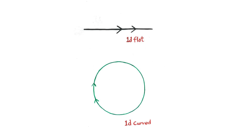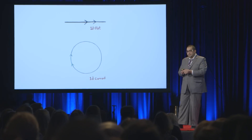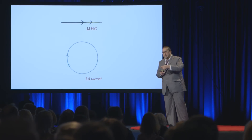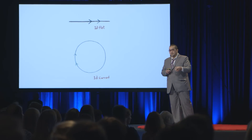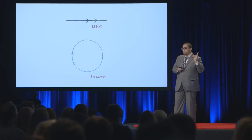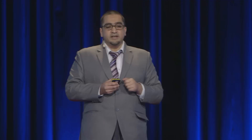You can take this line and curve it, form a circle out of it. What happens is that you end up from where you started from. On a circle, if you move on a circle, you will end up where you started from. On a straight line, you will just keep going ahead. This straight line is an example of a one-dimensional flat object, and a circle is an example of a one-dimensional curved object. That's as far as one dimensions go.